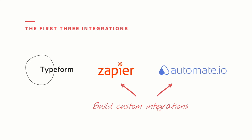Zapier and Automate.io are services where you can create custom integrations with apps that don't yet offer official integrations. In Zapier you create zaps, and in Automate.io you create bots.